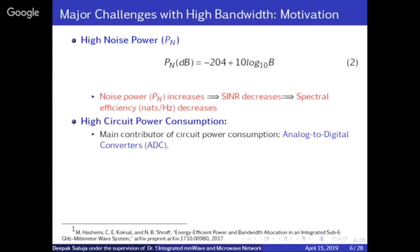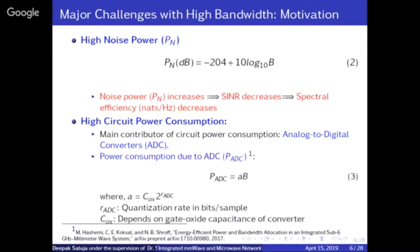The second major issue is higher circuit power consumption. ADC plays a major role in mobile circuitry and base station circuitry. ADC power is linear with bandwidth — it is essentially A times B, where A is a constant depending on the conversion rate and materials used, specifically C_ox times 2 to the power of R_ADC. So power consumption in the ADC is very high when bandwidth is high.